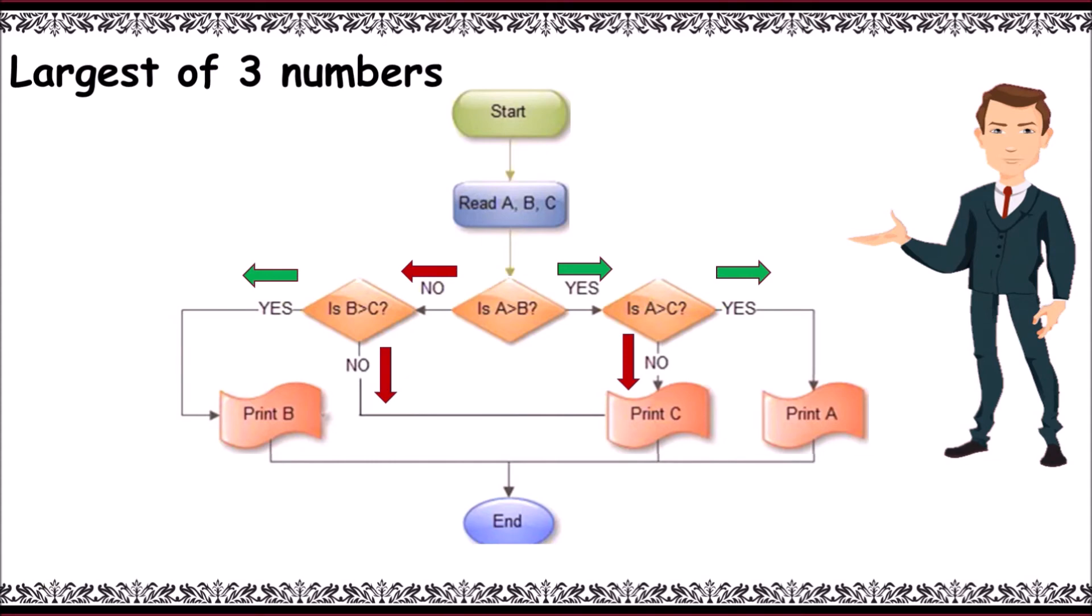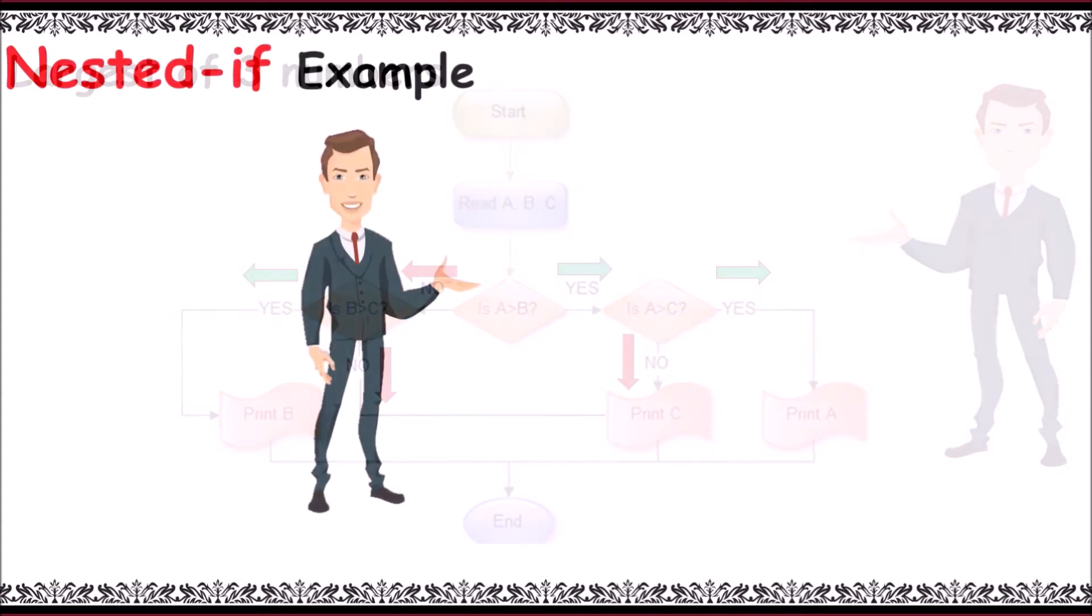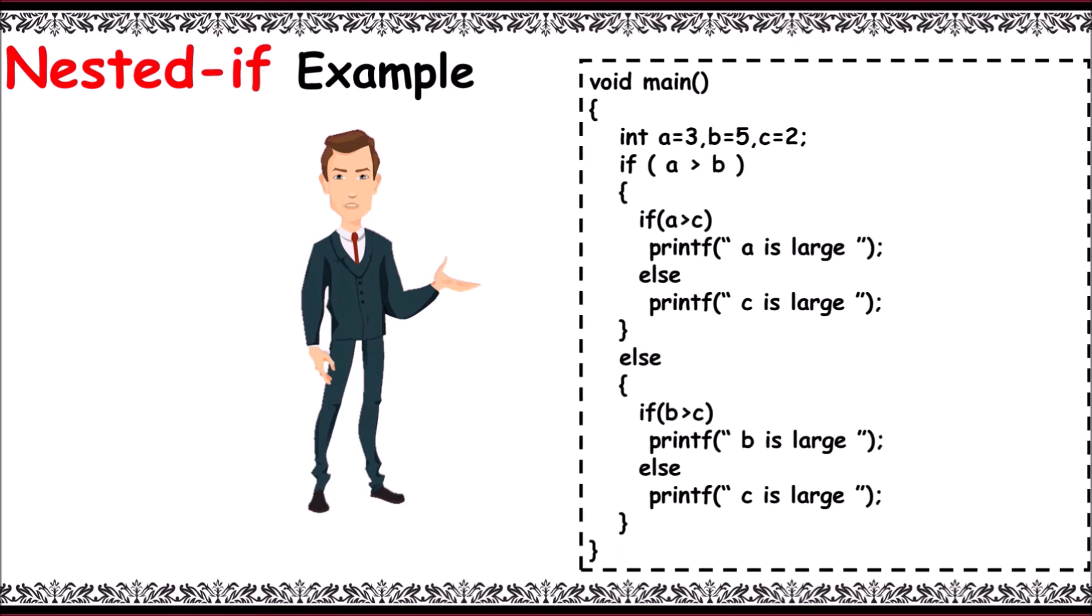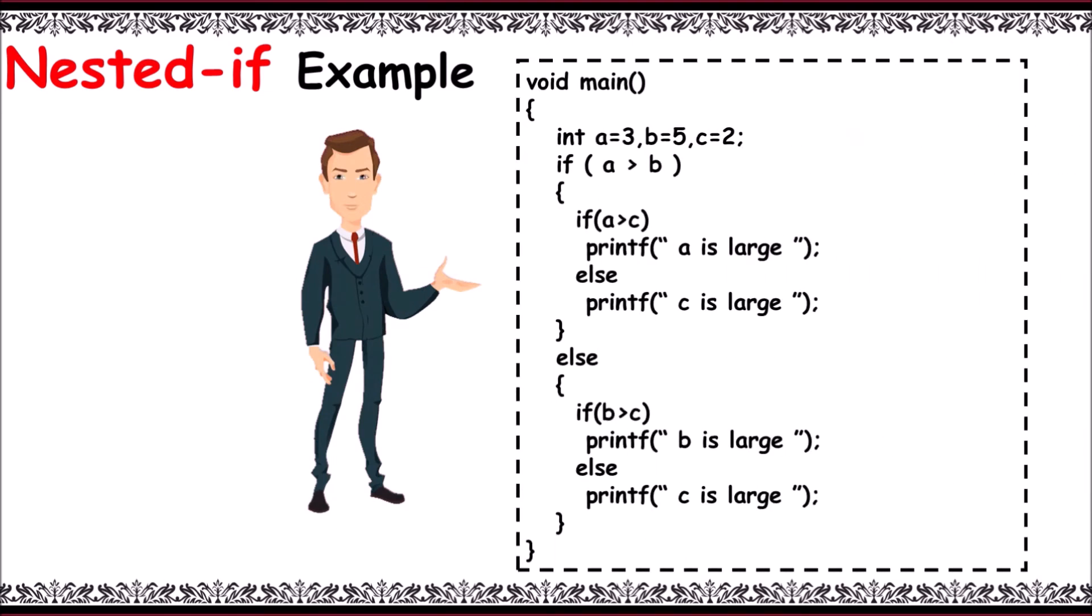The process comes to an end. Now consider a C program for finding the largest of three given numbers. Here we initialize a, b, and c with the values 3, 5, and 2 respectively.